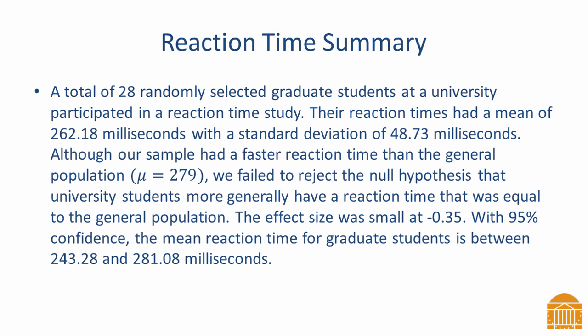A total of 28 randomly selected graduate students at a university participated in a reaction time study. Their reaction times had a mean of 262.18 milliseconds with a standard deviation of 48.73 milliseconds. Although our sample had a faster reaction time than the general population, we failed to reject the null hypothesis that university students, more generally, have a reaction time that was equal to the general population. The effect size was small at negative 0.35. With 95% confidence, the mean reaction time for graduate students is between 243.28 and 281.08 milliseconds.